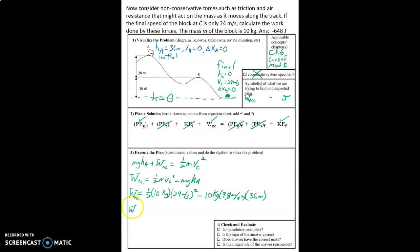So the work by non-conservative forces. Now, it's just a matter of plugging this into my calculator. 0.5 times 10 times 24 squared minus, I'm just putting this all in at once, minus 10 times 9.8 times 36.